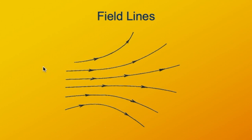Back to this diagram: we see the lines close together on the left and farther apart on the right. That's consistent with what we saw in the vector diagram — on the left, the vectors were fairly long, meaning large magnitude. On the right, the vectors are short, meaning lower magnitude. So stronger field on the left, weaker field off to the right.